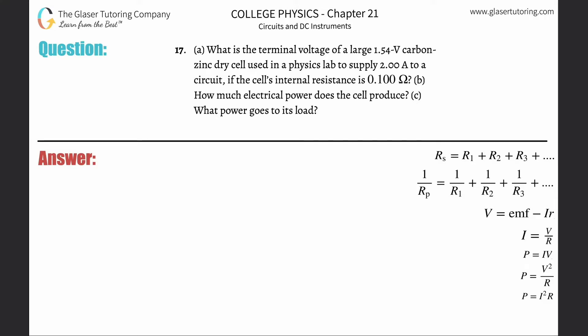Number 17, letter a: What is the terminal voltage of a large 1.54-volt carbon-zinc dry cell used in a physics lab to supply two amps to a circuit, if the cell's internal resistance is 0.1 ohms?